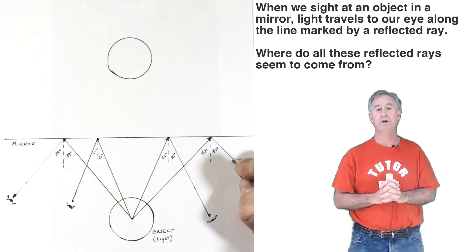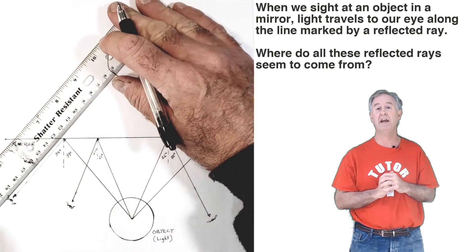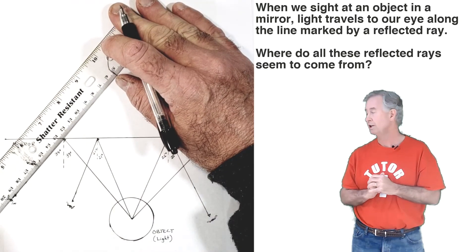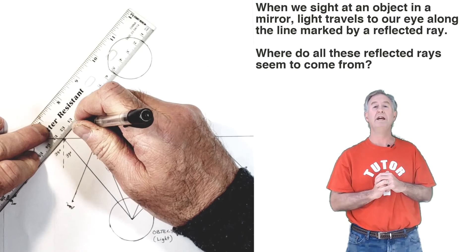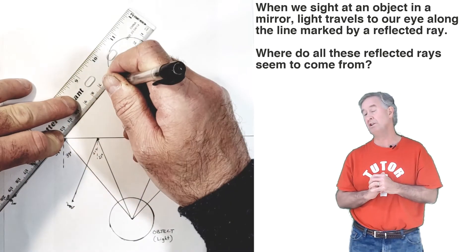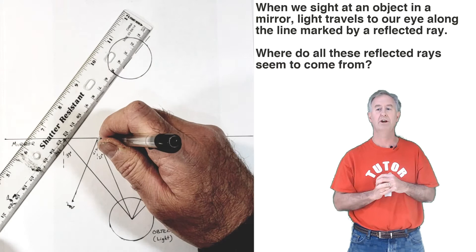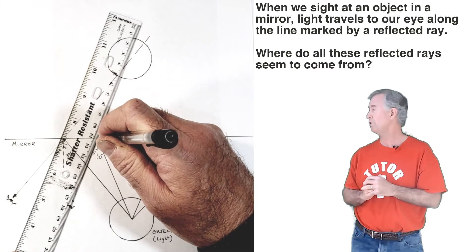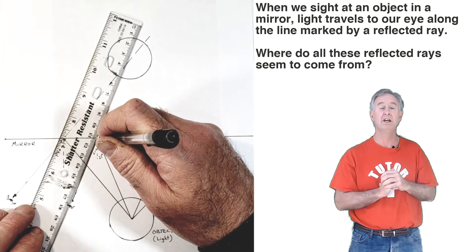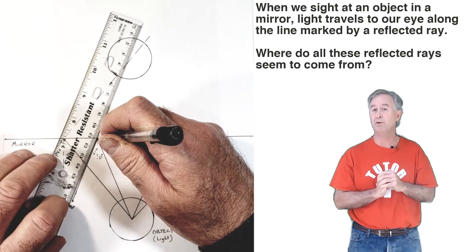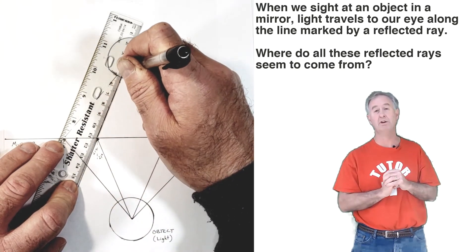What I'm going to do is take each one of these reflected rays and use a dashed line to trace it backwards behind the mirror. When I do it for this first ray, I notice that it intersects at the image location. When I do it for this second ray of light, that reflected ray extended backwards behind the mirror also intersects at the image location.